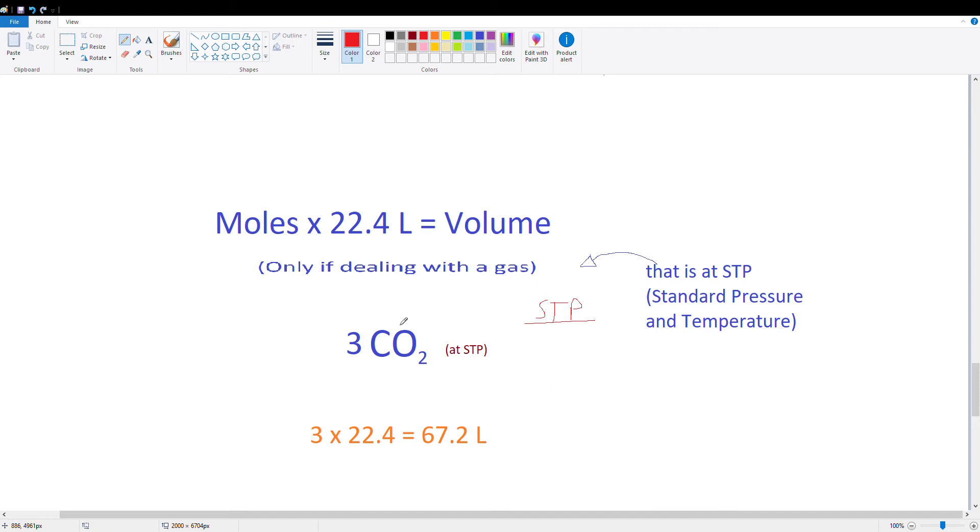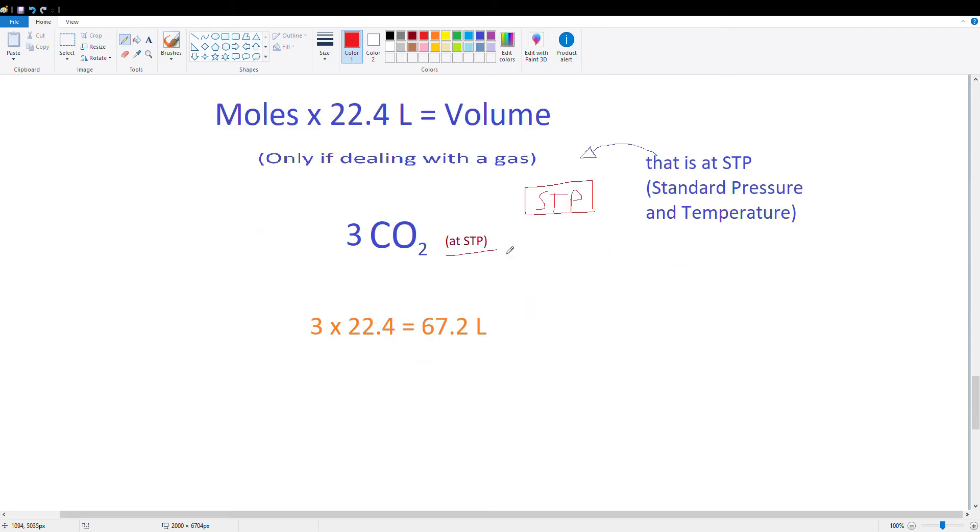So usually they won't say STP when you're learning this at the beginning in chemistry. You'll get into it later. So let's say that we're given 3 moles of carbon dioxide, which is a gas, so we can use this. So we have 3 moles of carbon dioxide, which is CO2, and we're assuming that it's at STP. So we're given that it's at STP.